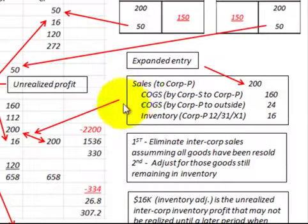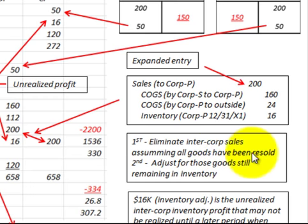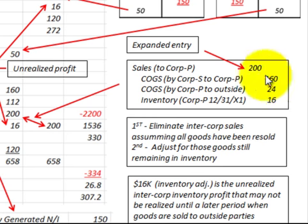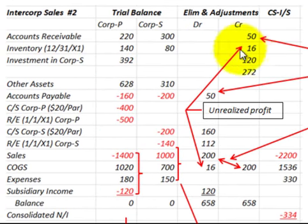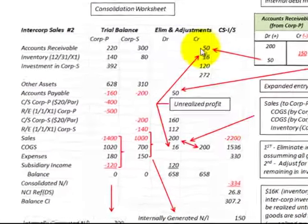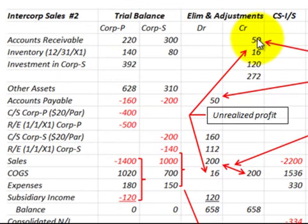For the consolidated worksheet adjustments, first we eliminate the intercompany sales assuming all goods have been resold: debit the sales account for $200,000 and credit $200,000 to cost of goods sold. Next, we adjust for goods still remaining in inventory — credit the inventory account for $16,000 and debit cost of goods sold for $16,000. To eliminate intercompany debt, credit accounts receivable for $50,000 and debit accounts payable for $50,000.